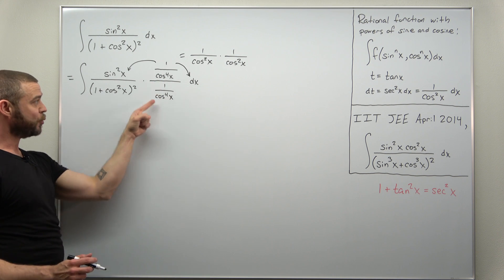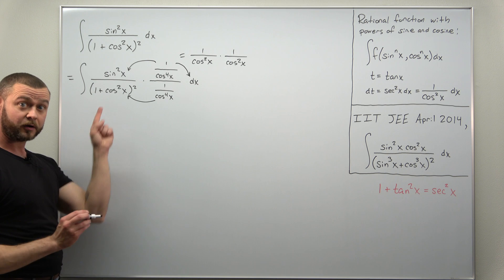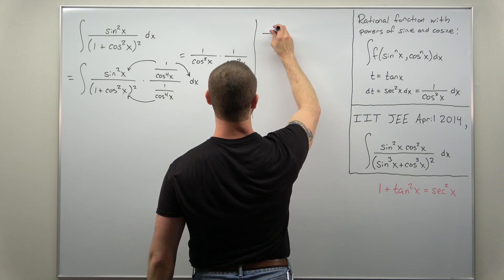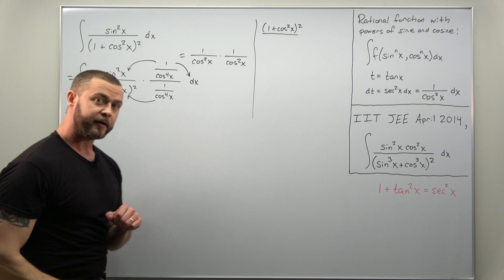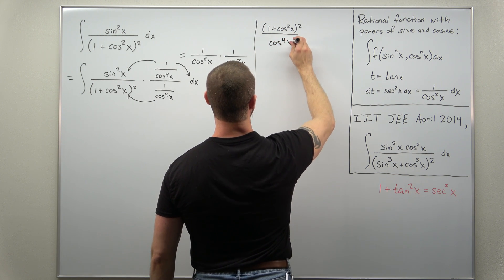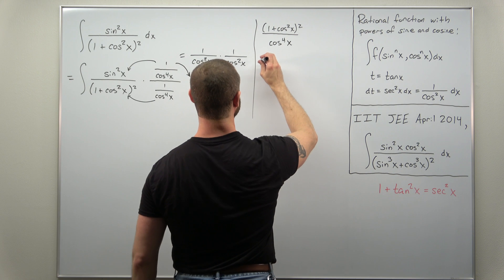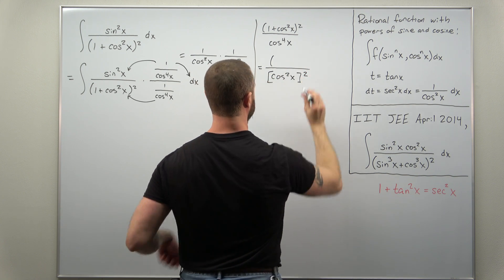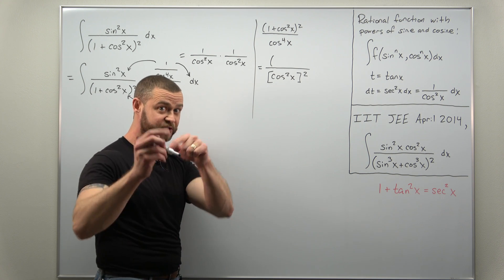The real work here is taking the one over cosine to the fourth power of x in the denominator and distributing it into the denominator. We have the fraction one plus cosine squared of x, all squared, and we're going to put cosine to the fourth power of x underneath it. We can think of cosine to the fourth power of x as cosine squared of x, all squared, so we can use basic properties of exponents and fractions to combine the numerator and denominator into a single fraction raised to the second power.